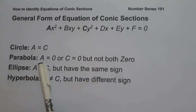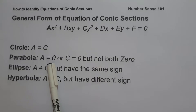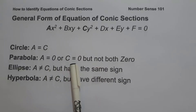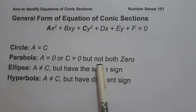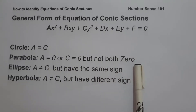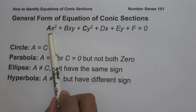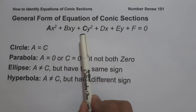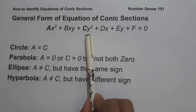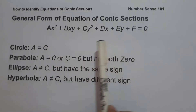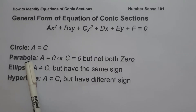And if the value of a or the value of c is equal to zero but not both equal to zero — that means if you don't have an x² term or y² term — the given equation is a parabola.